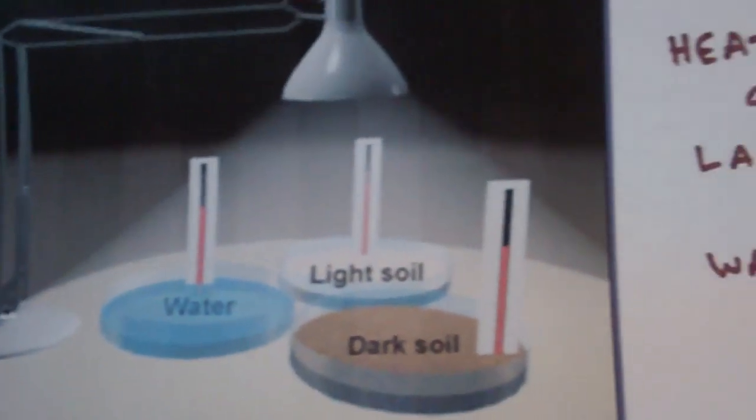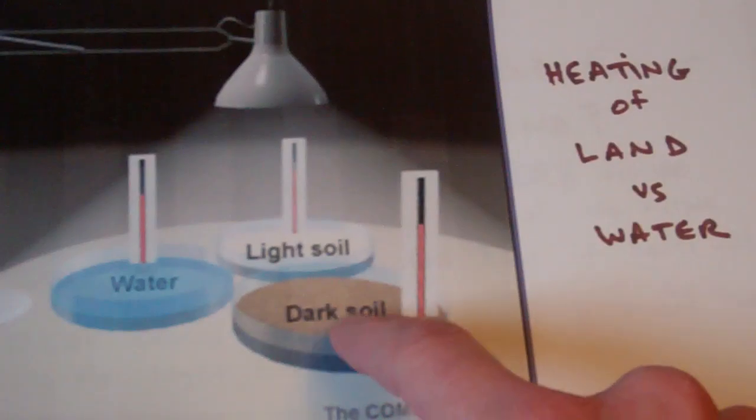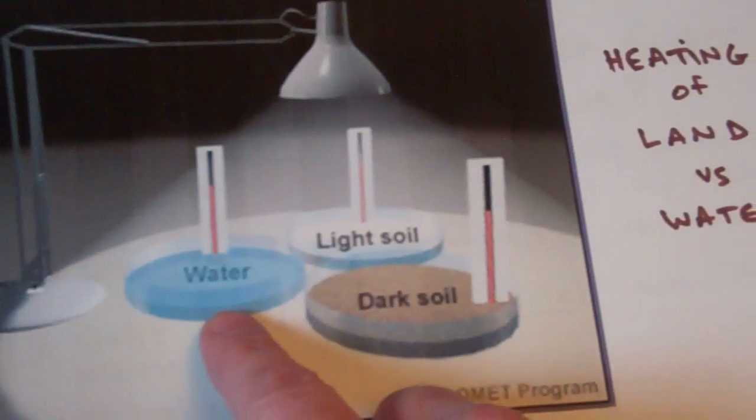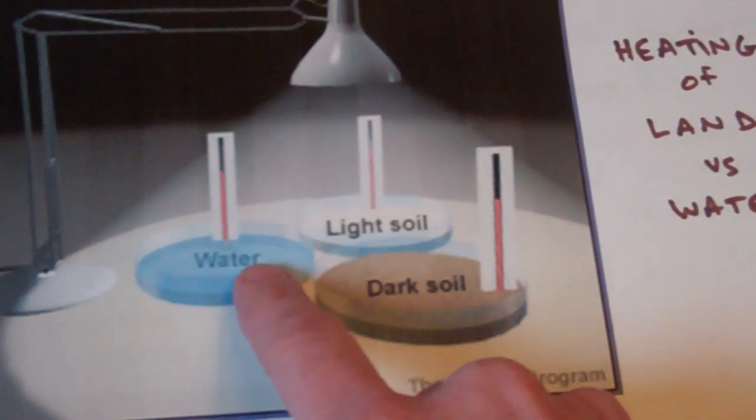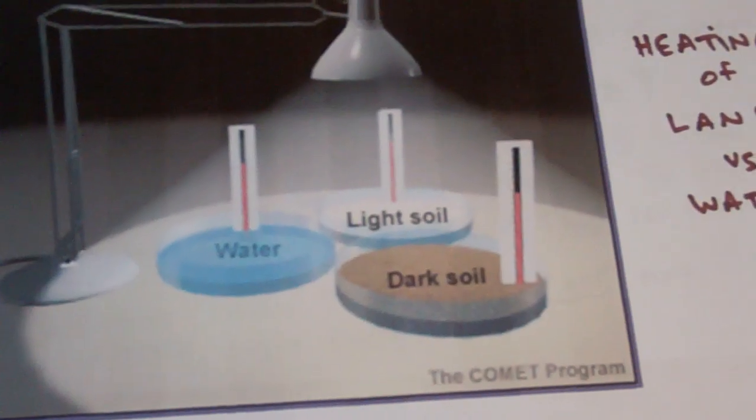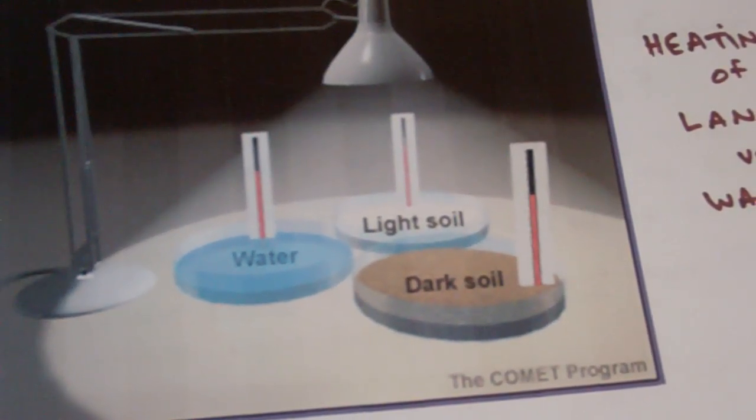So thinking back to that, it heats up very quickly. It's absorbing a lot of the energy. This is absorbing some, but reflecting some of it. And water, just by the nature of water itself and the molecules and the bonds in the water, it's not because of reflecting and absorbing, it's just because of the nature of water has what we call a high heat capacity. It holds its temperature. It heats up slowly, holds onto that temperature, cools down slowly.